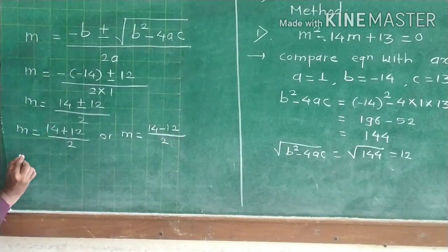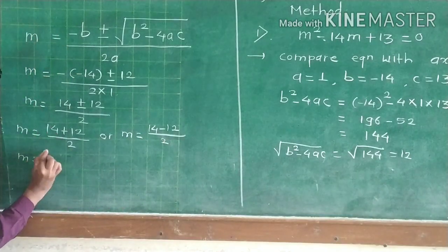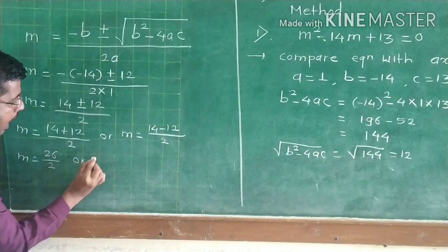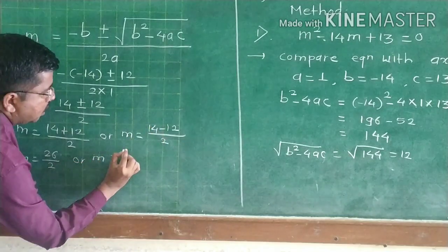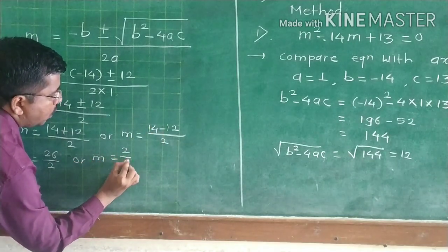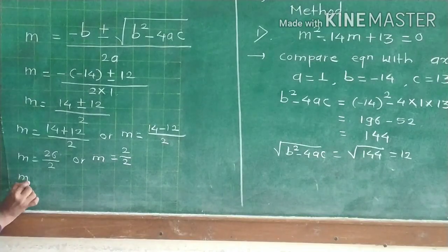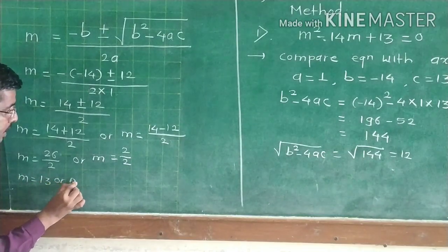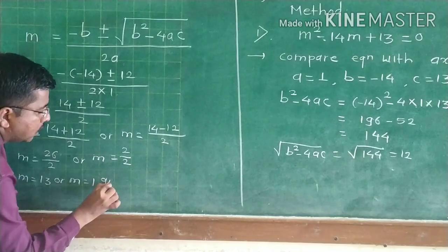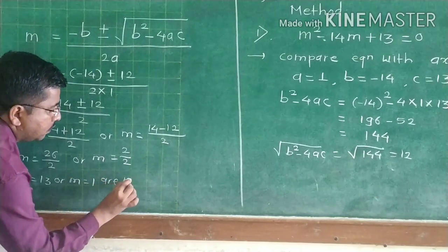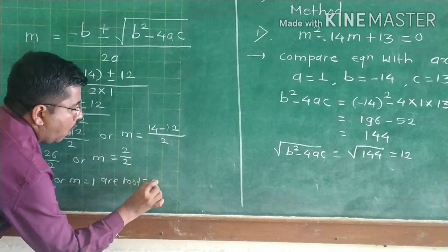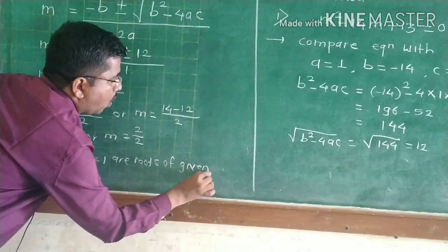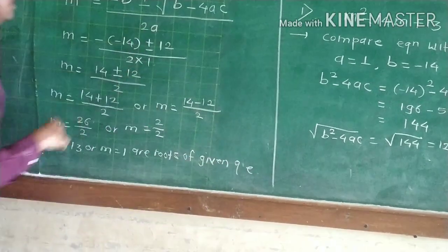So m equals 14 plus 12 upon 2, giving m equals 13, or m equals 14 minus 12 upon 2, giving m equals 1. These are the roots of the given quadratic equation.